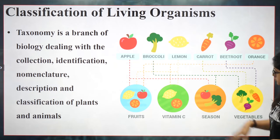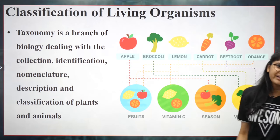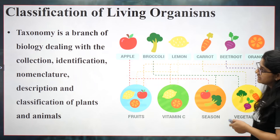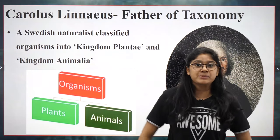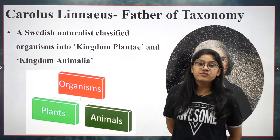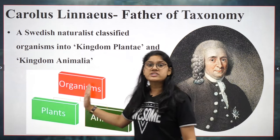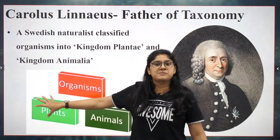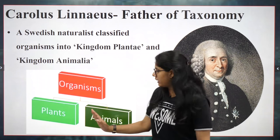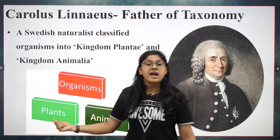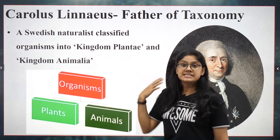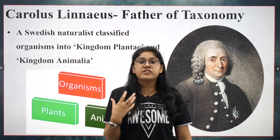Just as we classify different types of fruits, we also classify organisms. There was a very famous scientist, Carolus Linnaeus, who gave the first classification. Organisms were divided on a simple basis: plants and animals. Those who cannot move came under the category of plants, and those who can move came under the category of animals. He was a Swedish scientist who gave us the first classification.